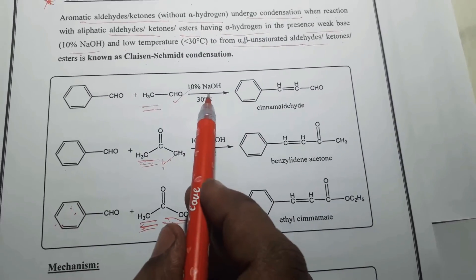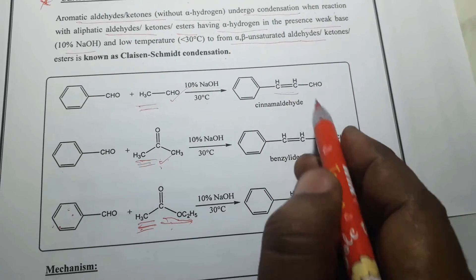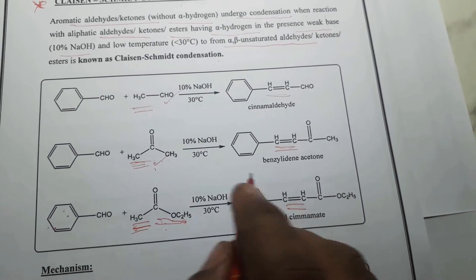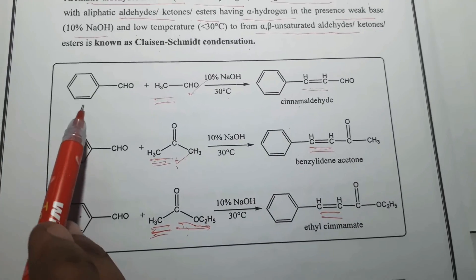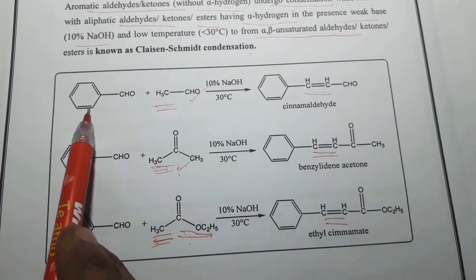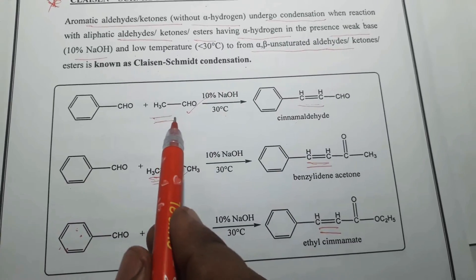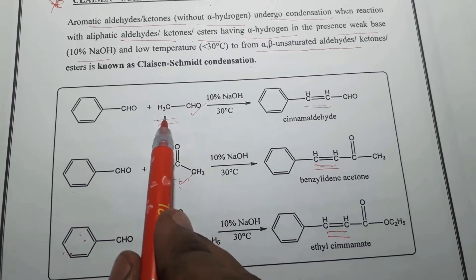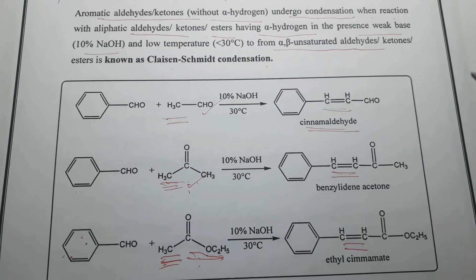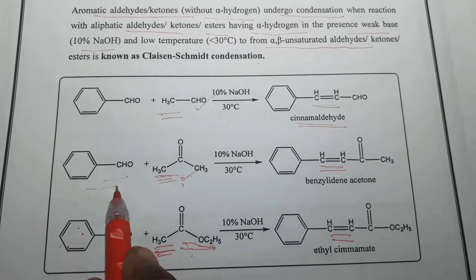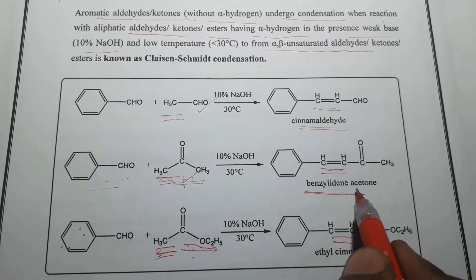In the presence of a weak base at low temperature, this leads to producing the respective alpha-beta unsaturated aldehydes, ketones, or esters. The first reaction: aromatic aldehyde benzaldehyde, without alpha-hydrogens, undergoes condensation with an aliphatic aldehyde having alpha-hydrogens, giving cinnamaldehyde. Similarly, the aromatic aldehyde reacting with an aliphatic ketone gives benzylidene acetone.